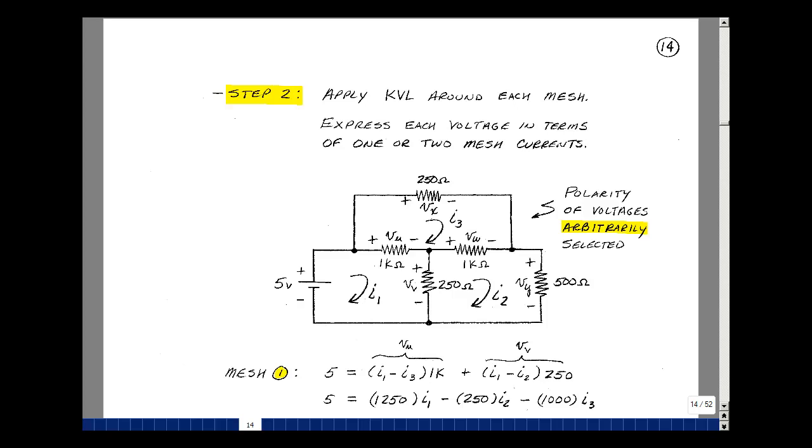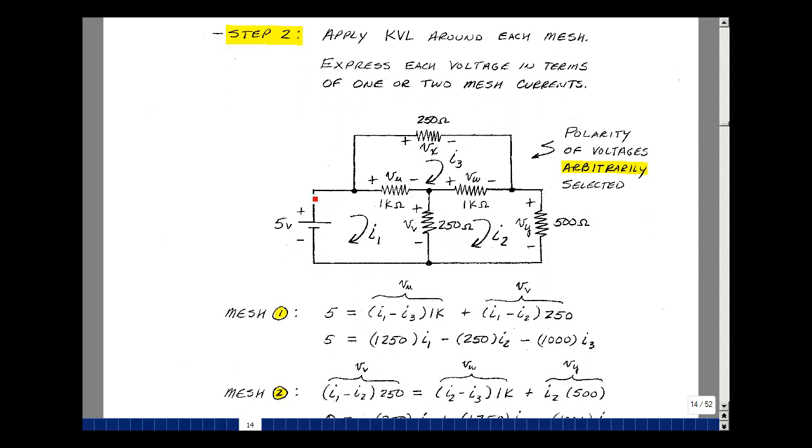We need to express each voltage in terms of either one or two mesh currents. Go around the mesh clockwise. The rise in voltage is five. The drop is V sub u plus the drop of V sub v. Now what is the voltage here? Well, it's going to be 1k times the current I1 minus I3. And the voltage V sub v is going to be 250 ohms times the current I1 minus I sub 2. Multiplying that out and grouping all the I1 terms, I have 1k plus 250. I have minus I2 times 250. And then I have I3 minus 1,000. So I have one equation and three unknowns.